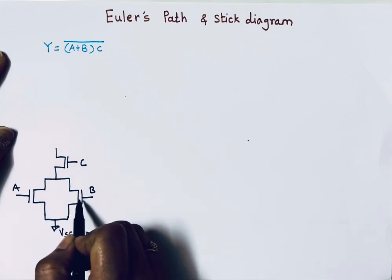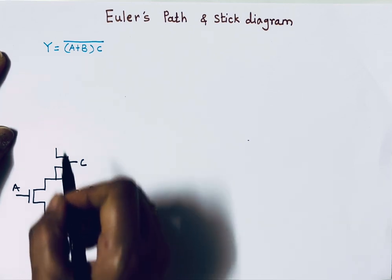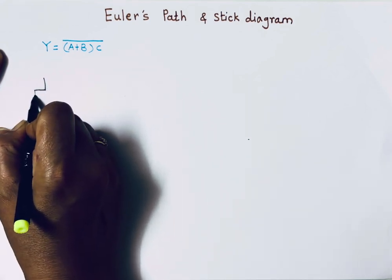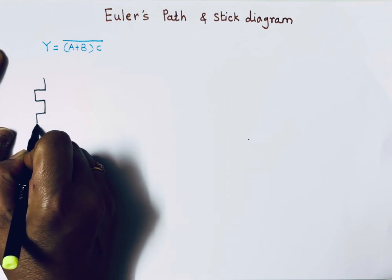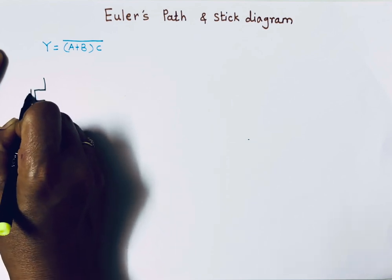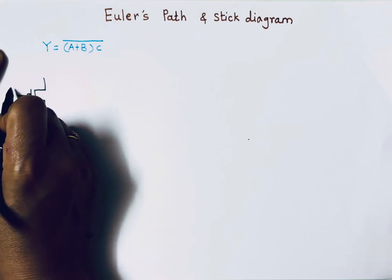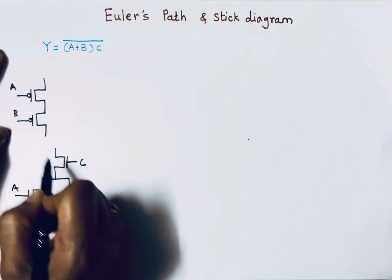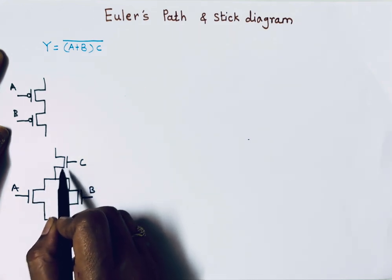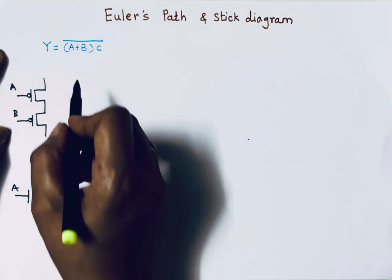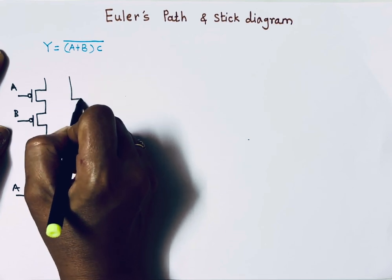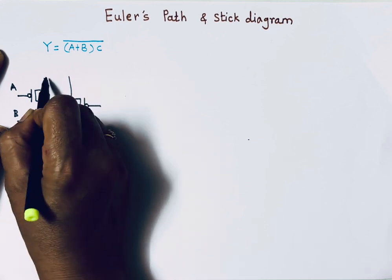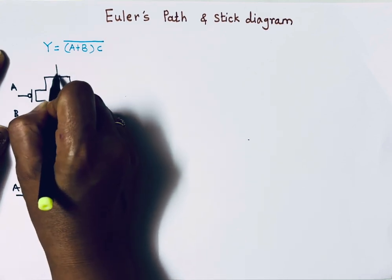Now let's draw the pull-up network. Since A and B are in parallel in the pull-down, we connect A and B in series for PMOS. The PMOS symbol uses a bubble. A and B are connected in series, and C — which was in series in the pull-down — is connected in parallel here. This is the pull-up network, connected to VDD.